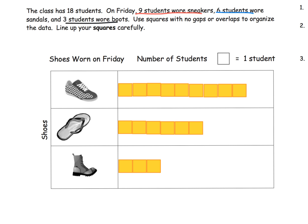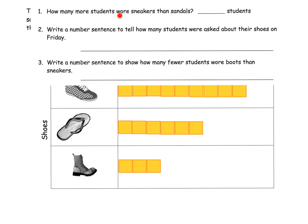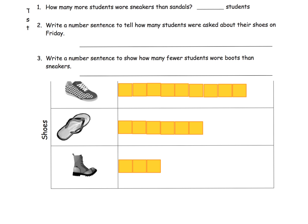Now the whole point of this is that we can answer a bunch of questions about this. One question might be, how many more students wore sneakers than sandals? You've got the sneakers and sandals right here. The question is, how many more chose sneakers? We can see that they're even up to here, and so the difference is these three right here. The answer is three. The next question is, write a number sentence to tell how many students were asked about their shoes. We have nine here, six here, and three here. So a number sentence could be nine plus six plus three, which equals 18.